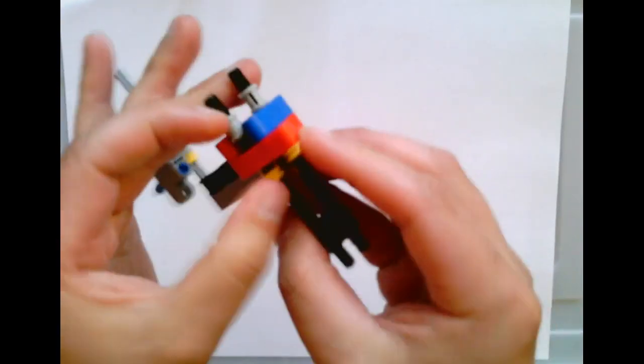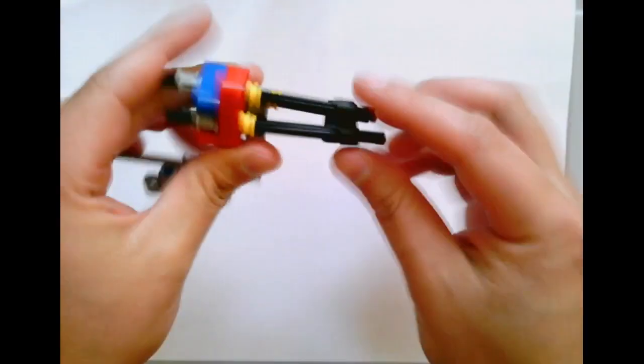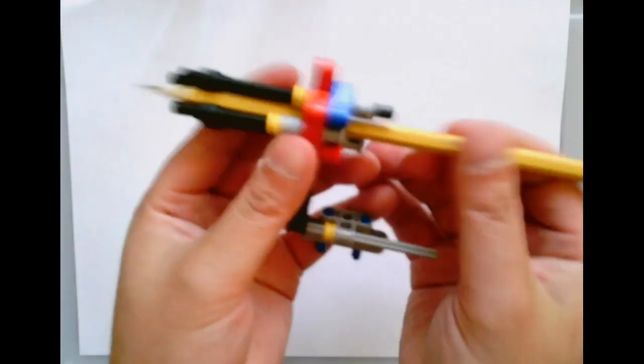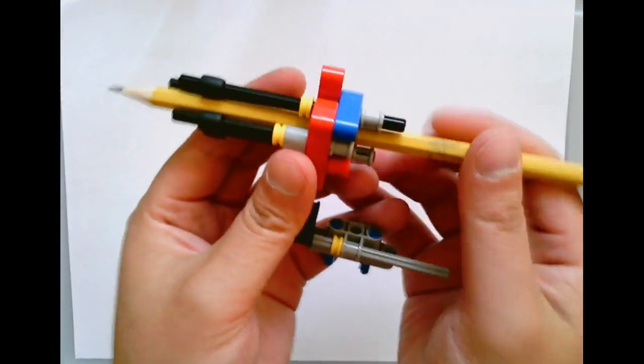That just kind of keeps them, it kind of squishes them together a bit, the axles, so that when you put a pencil through it, it doesn't move around. The pencil does not move around.